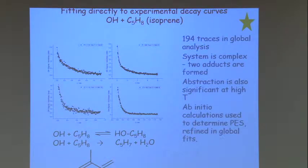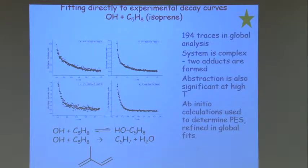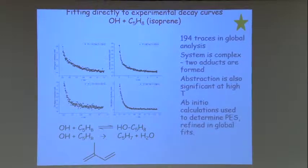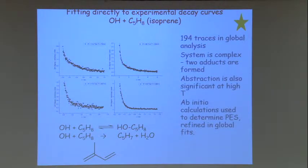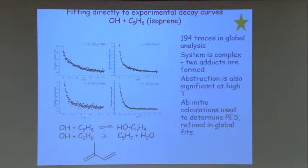Now this is hot off the press. This is fitting not to rate constants but to experimental decay profiles. This is an experiment looking at OH plus isoprene, C5H8. It's a pretty complicated system because there are the reactants, two possible adducts that can go on and react, and in addition there is the possibility of an abstraction reaction occurring as well.